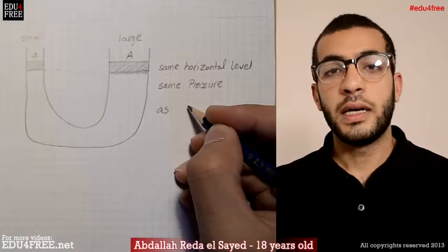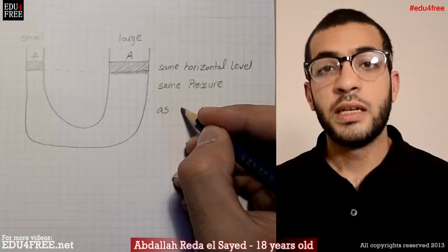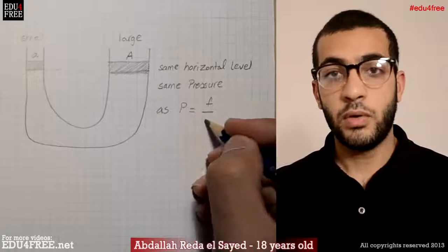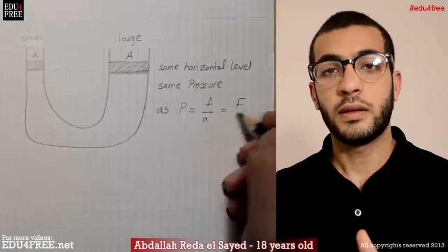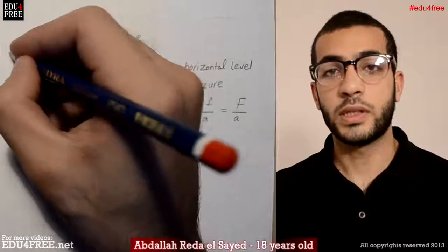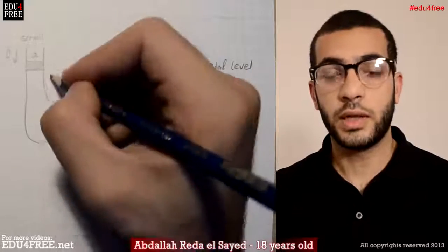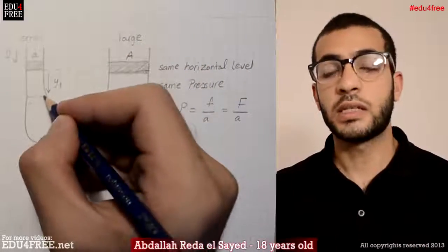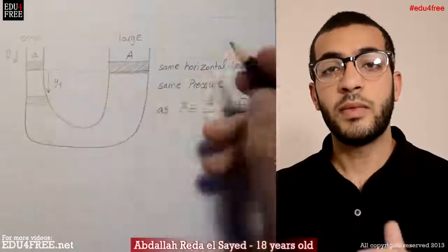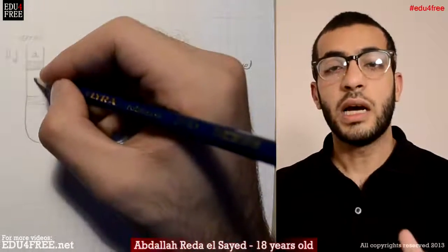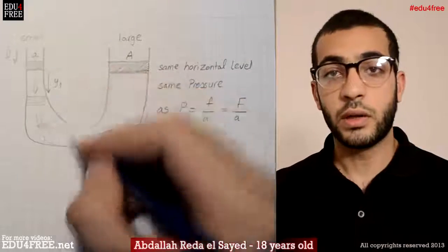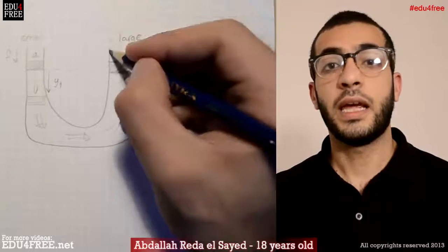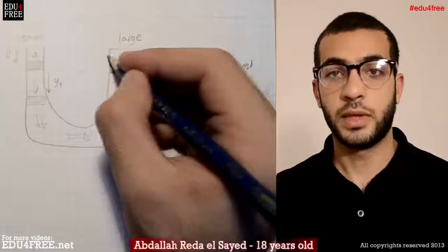It's a matter of proportion. The equation is: the pressure at both ends equals the force exerted on the small piston over the cross-sectional area of the small piston, written as f over a in lowercase, and at the same time this equals the force exerted on the large piston over the cross-sectional area of the large piston, written as F over A in uppercase.